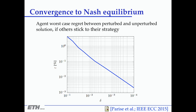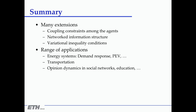That's more or less the basic result. We've also obtained results along various extensions: for example, coupling constraints among the agents — in the plug-in EV example, substation constraints where a neighborhood feeds off the same substation and total demand cannot exceed the substation rating. You can also have network information structure where agents only exchange information along a network, and we've worked out when iteration converges under these different cases.